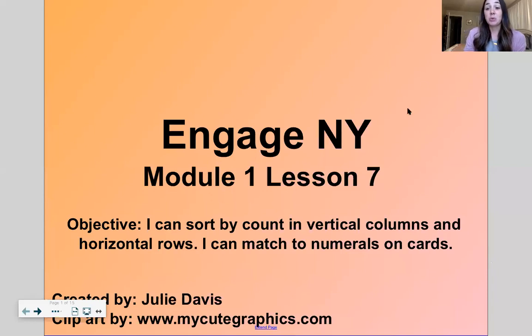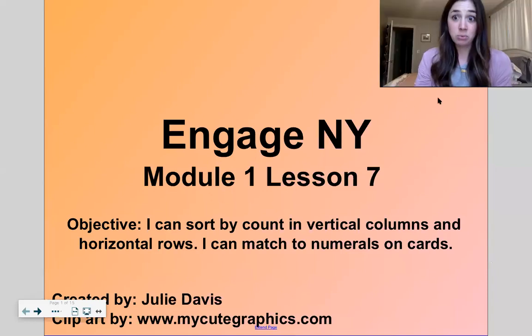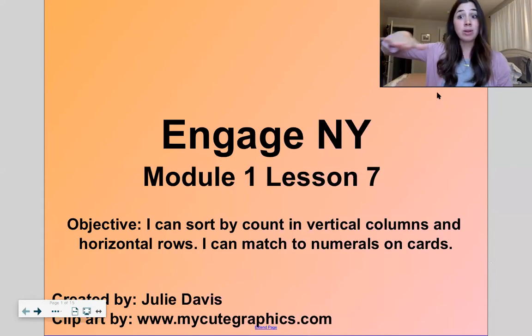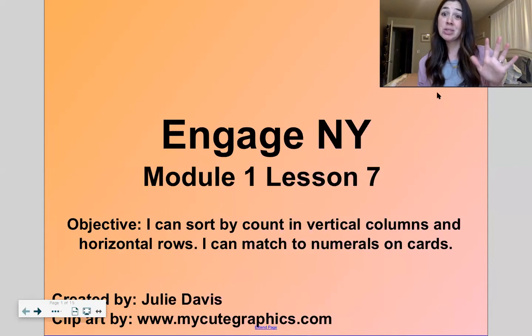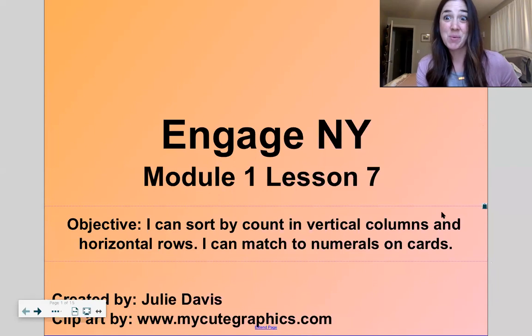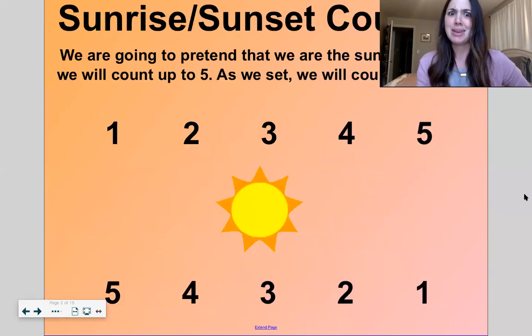As always we'll have our five steps. We'll do our fluency games, we'll warm up with a fun game, we will do our concept development, chat about what we learned and then you will get to do your exit ticket in Google Forms. I can sort by count in vertical columns in horizontal rows. I can match numbers to cards, which is a great way to begin number identification and making sense of numbers.